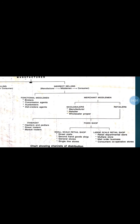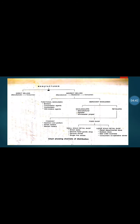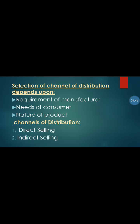Merchant middlemen include two types: wholesalers and retailers. Retailers are again classified into two types: itinerant retailers and fixed shop retailers. The selection of channels of distribution depends on some factors: first, the requirement of the manufacturer; second, the needs of the consumer; and third, the nature of the product.